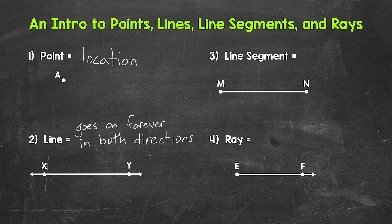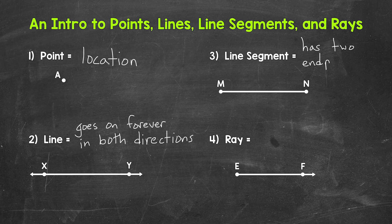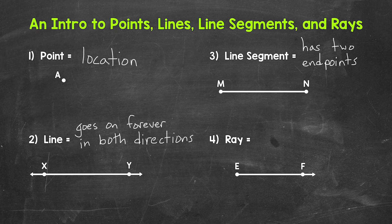Let's move on to line segments. A line segment has two endpoints. They have a starting and stopping point, so to speak. A line segment can be measured — they don't go on forever. So let's put 'has two endpoints' for our notes. For our example, we have line segment MN. That line segment stops at point M and stops at point N. Those are the two endpoints. We will go into naming line segments in another section.